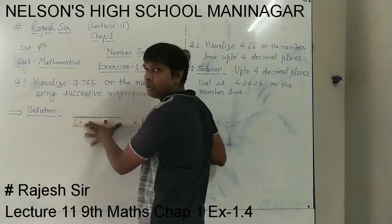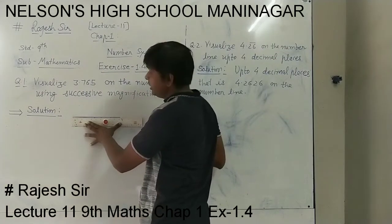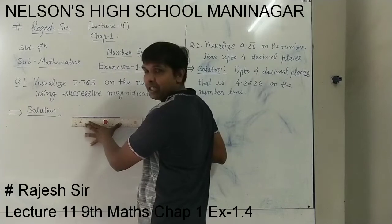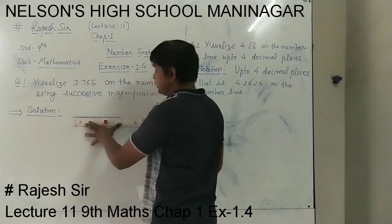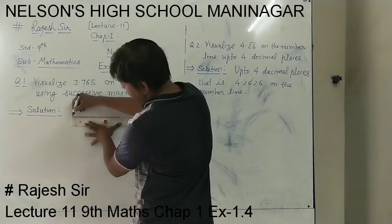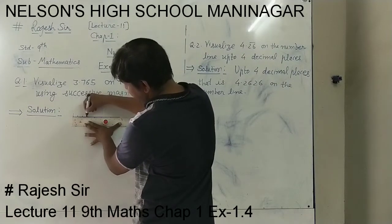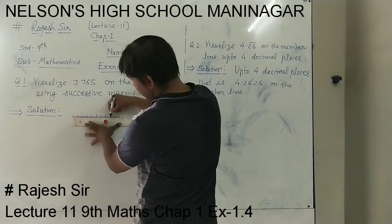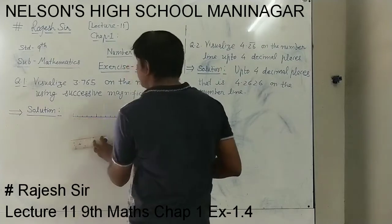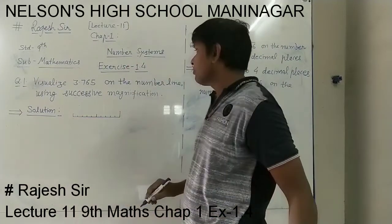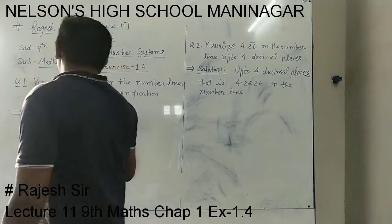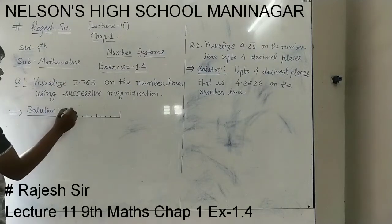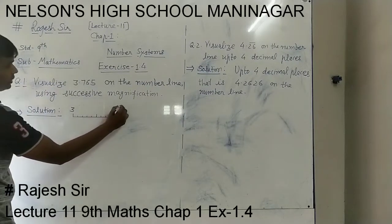We will make 10 parts on this line. I am going to show you on the board clearly. You will use a scale and draw in centimeters — a 10 cm line segment. Mark 0 through 10, making 10 equal parts. Since the number 3.765 starts from 3-point-something, it is greater than 3 but less than 4, so we show 3 here and 4 here.